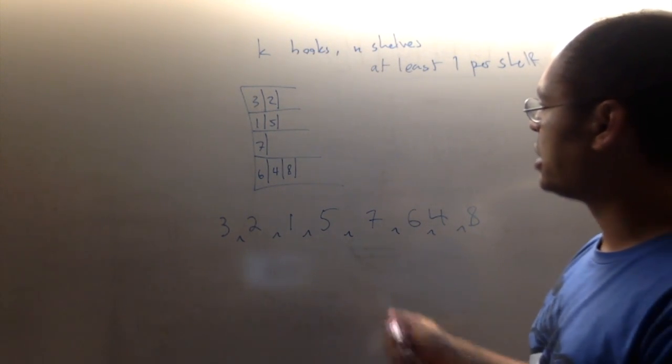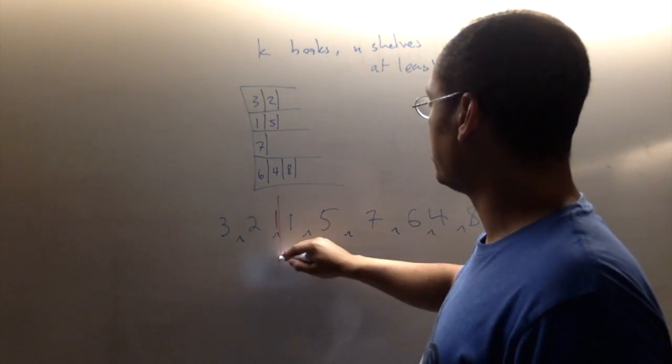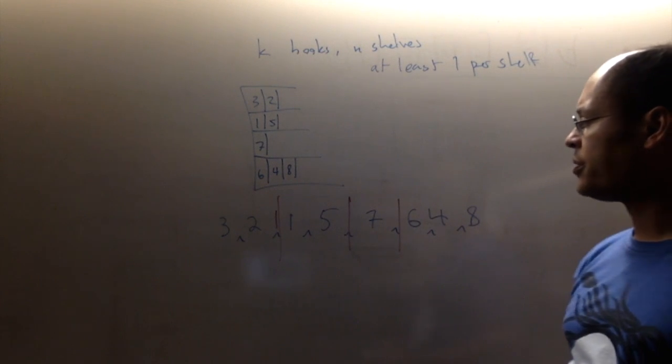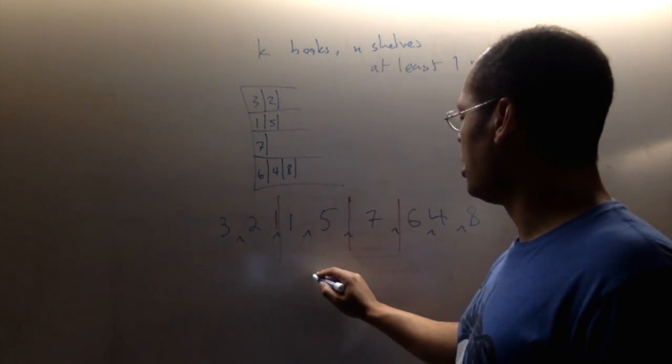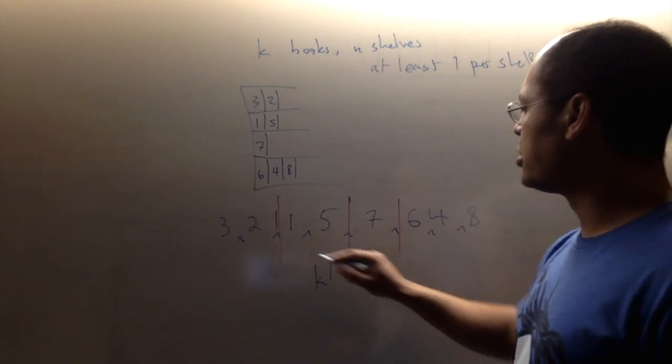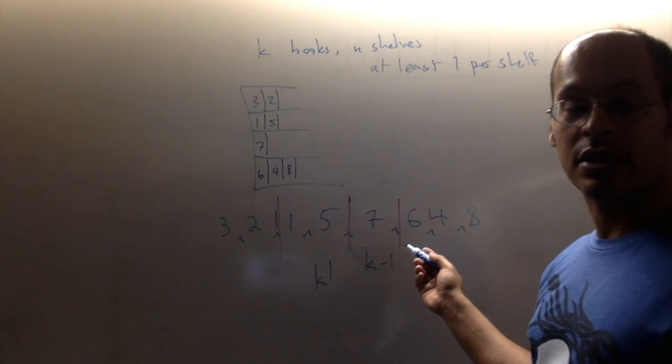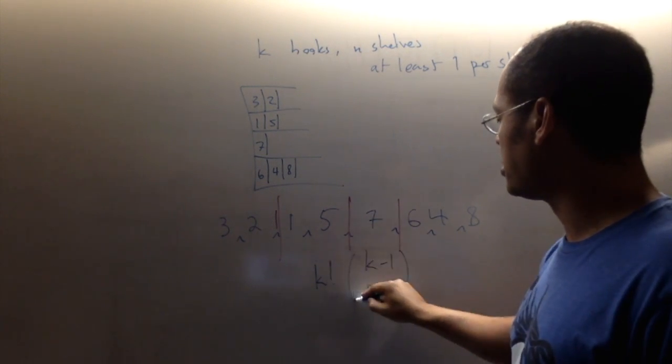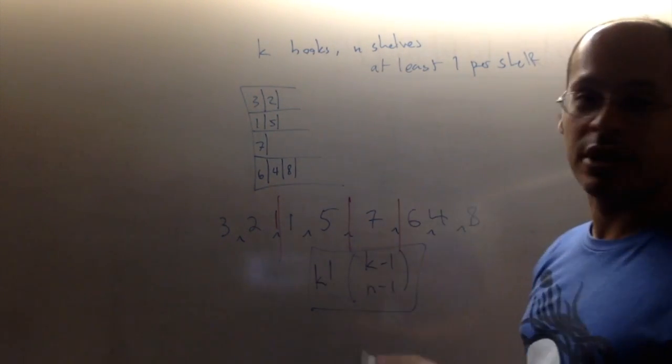And what we're going to do is we're going to say we need to decide in which of those, in our actual example, we actually place separators. So in our example right here, these are the three separators for these three shelves. So how could we actually have counted that? Well, just like before, we're going to start with a permutation of our k books. And then, in between those k books, we have k minus one spaces. And we're going to choose which of those k minus one spaces are going to be our shelf separators. If we have n shelves, we need n minus one shelf separators. And that gives us our count for how many ways we have placed these books with at least one per shelf.